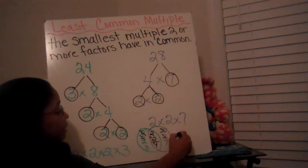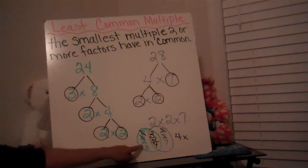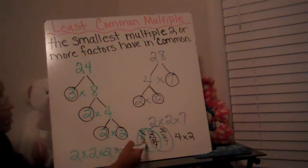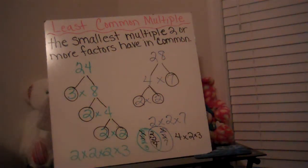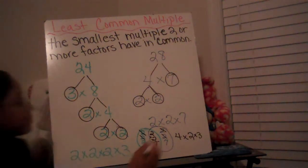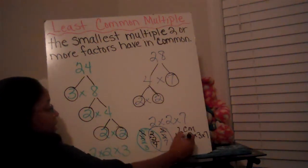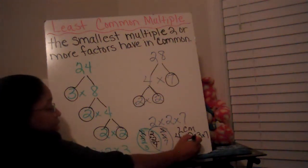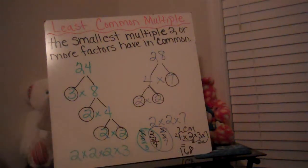I'm going to take that 4 and multiply it with all the numbers that were not crossed out — not in common. This 2 was not in common with anything in the blue circle, so I'm going to write it. This 3 was not in common with anything in the blue circle. And this 7 didn't have anything in common in the green circle. Now to find my LCM, I multiply all of those numbers together: 4 times 2 is 8, 8 times 3 is 24, and 24 times 7 gives me 168. So the LCM for 24 and 28 is 168.